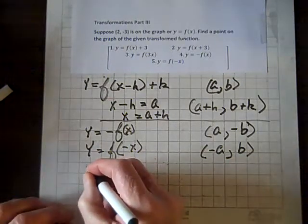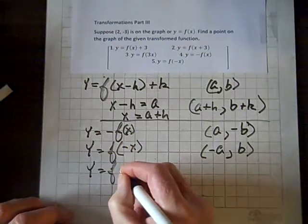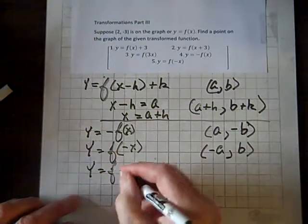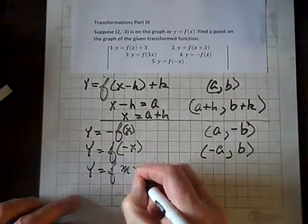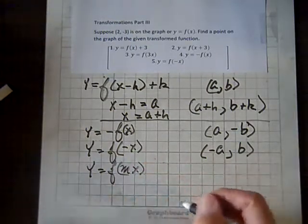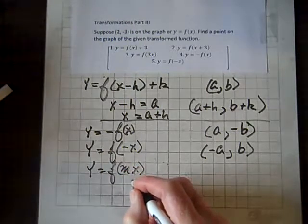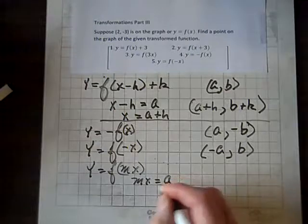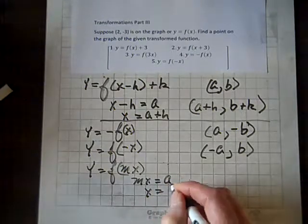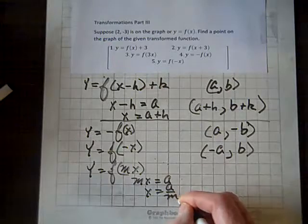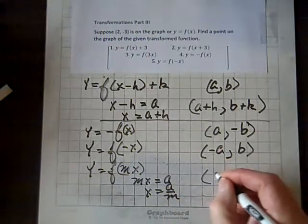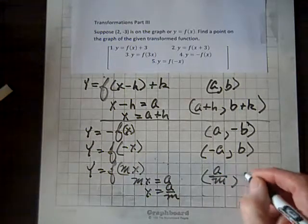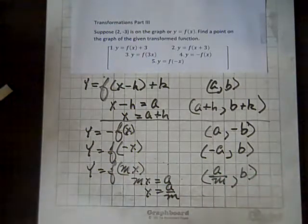And what if we have, finally, y equals f of x... I beg your pardon... f of mx. In this case, you set, as we did before, mx equal to a, and you solve for x, and you get a over m. And so, now the new horizontal coordinate is a over m, and the b coordinate has not changed.